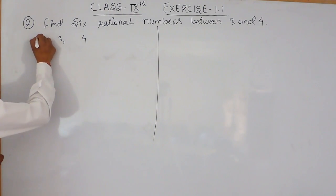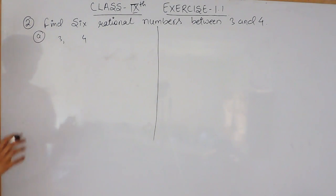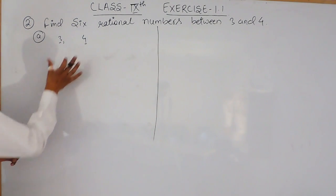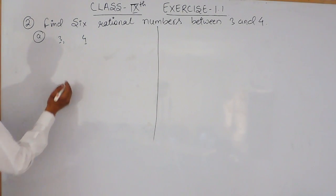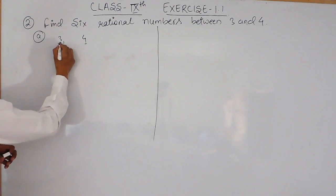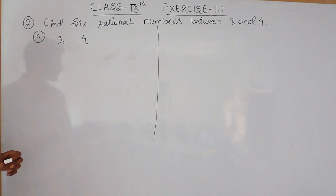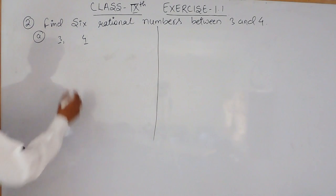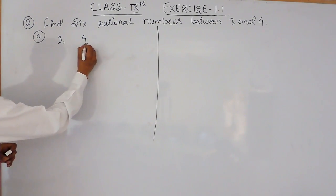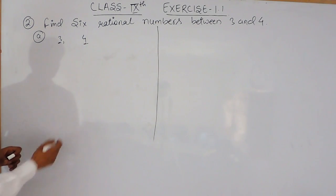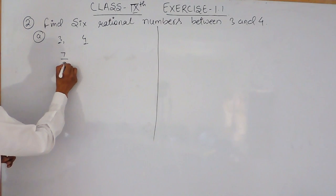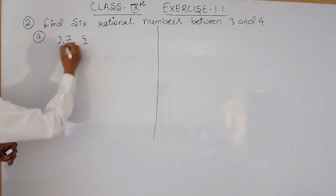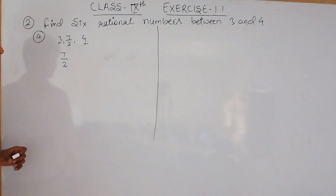The first method: if you want to find a rational number between any two numbers, you have to first add the two numbers and divide by 2. So 4 plus 3 is 7, and 7 by 2 is the first rational number between 3 and 4.